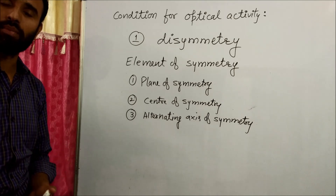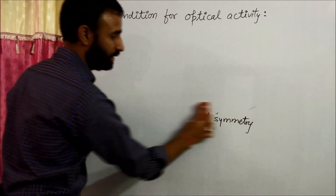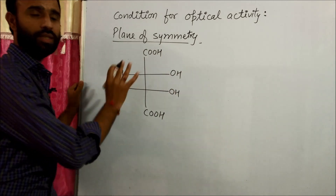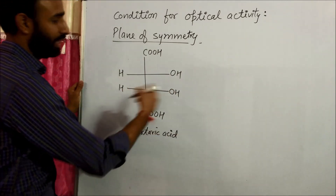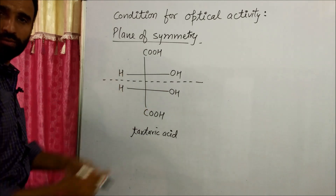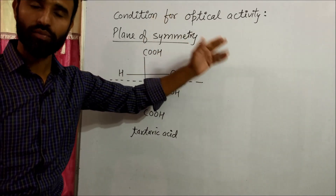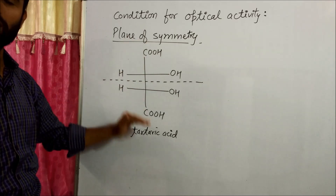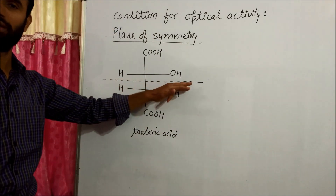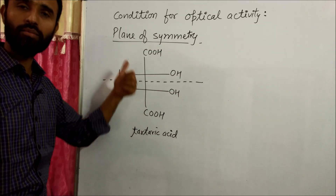That dissymmetric molecule can rotate the plane polarized light. Now we discuss them one by one. First is plane of symmetry. Let us take the case of tartaric acid. If we draw a plane at the middle of the molecule, it divides the molecule into equal halves. The plane which divides the molecule into two equal halves is called the plane of symmetry.